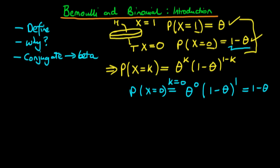So we've reproduced the case when x equals 0 — in other words, we get a tail. Similarly, if we set k equal to 1, the exponent on the second term becomes 0, so that term equals 1, and the right-hand side becomes theta for the case when x equals 1. In both cases the formula reproduces the correct probability, and this is our probability distribution for the Bernoulli distribution — a binary indicator variable for a single flip.